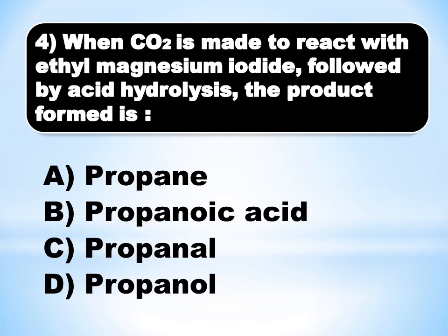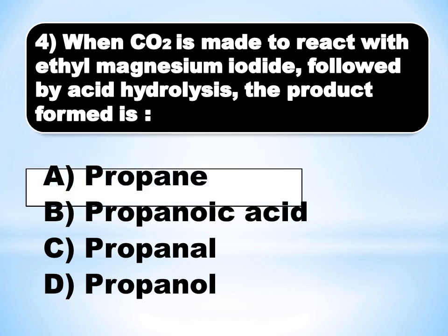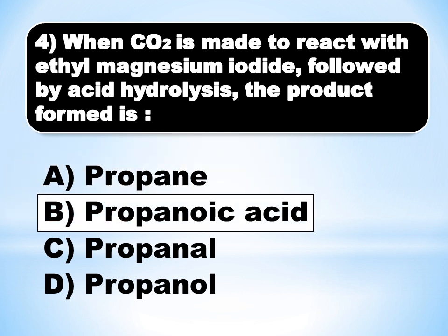MCQ number 4: When carbon dioxide is made to react with ethyl magnesium iodide, followed by acid hydrolysis, the product formed is propanoic acid. This MCQ is from chapter number 10, also in the Grignard reagent reaction exercise.